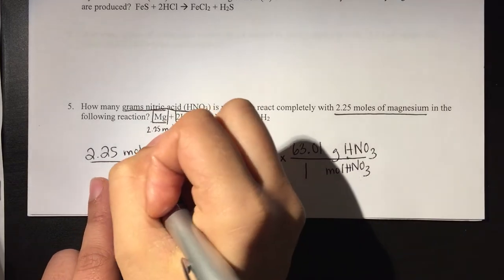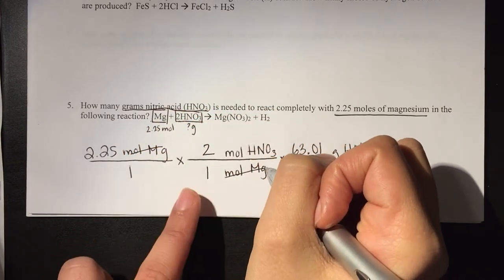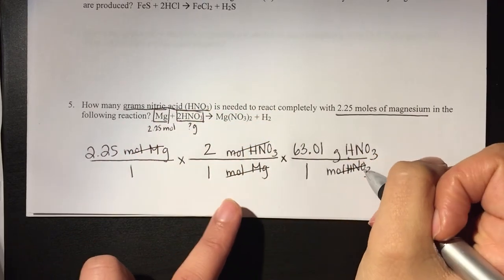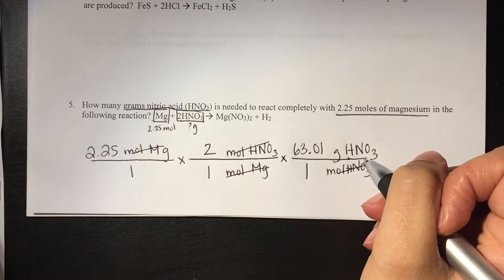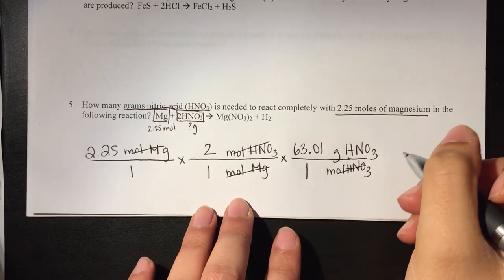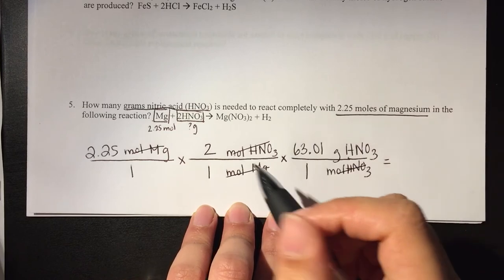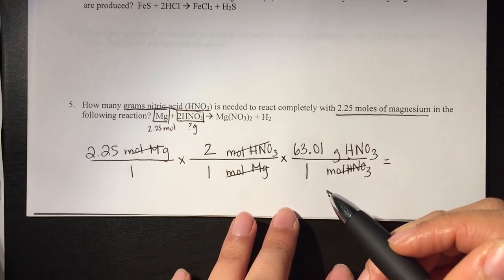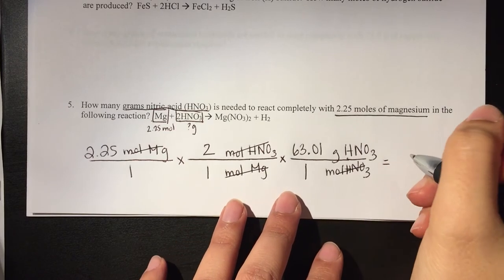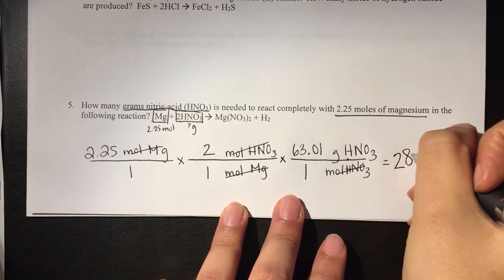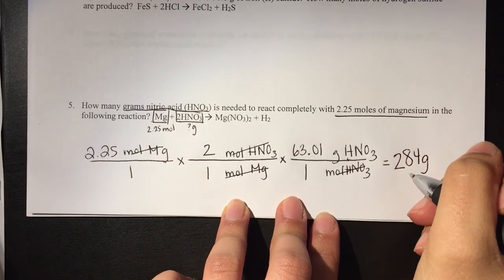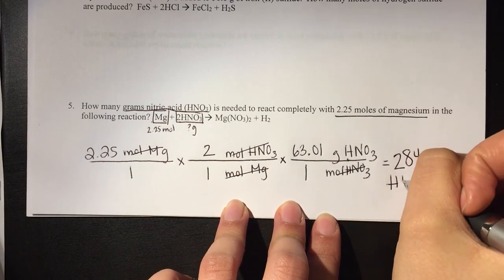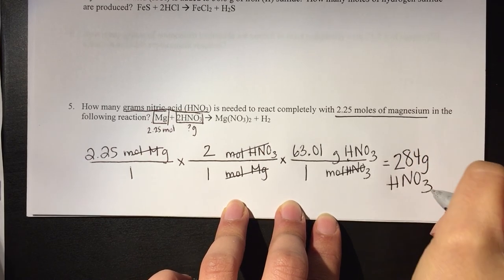And we check, we cross out all like units, and we're left with grams of nitric acid, or HNO3. We multiply across and divide. We will find that we have 284 grams of HNO3.